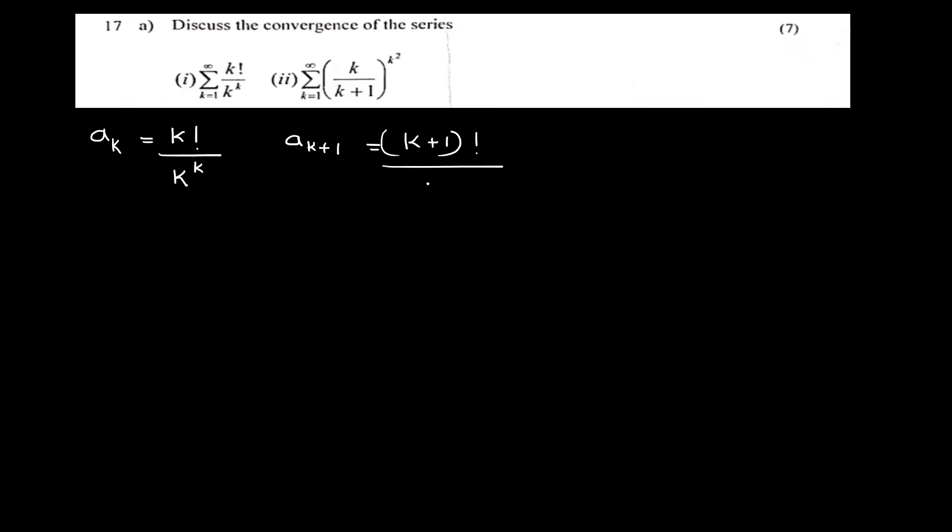Discuss the convergence of two series. First one: sigma k equal to 1 to infinity, k factorial divided by k raised to k. Second one: sigma k equal to 1 to infinity, k by k plus 1, all raised to k squared. For the first one, a_k equals k factorial by k raised to k. We will test the ratio test. So a_{k+1} equals k plus 1 factorial divided by k plus 1, all raised to k plus 1.